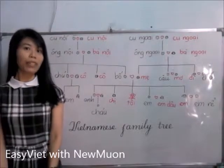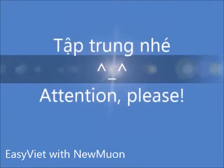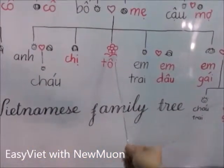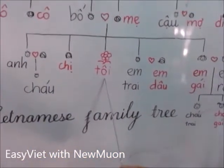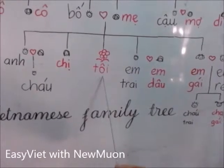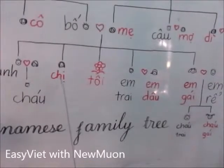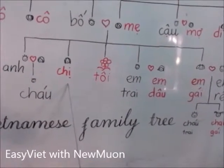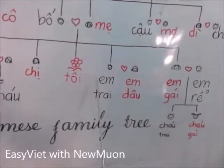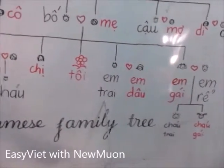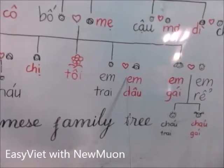Now I'm going to talk about details. It's me here — Tôi. I have two brothers and two sisters. My older brother is Anh. My older sister is Chị. My younger brother is Em Trai — Trai means male. And his wife is Em Dâu.